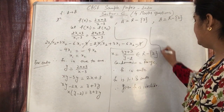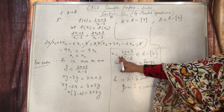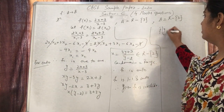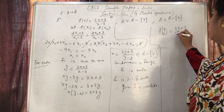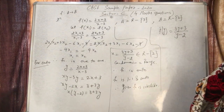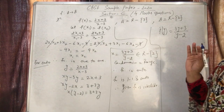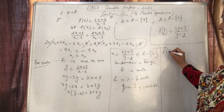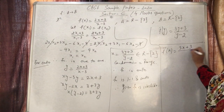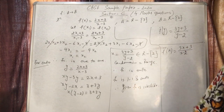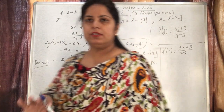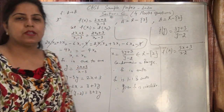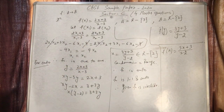Now we need to find the inverse. The value of x in terms of y that we found — x = (3y+3)/(y-2) — that is the inverse. So f⁻¹(y) = (3y+3)/(y-2). If the question asks for f⁻¹(x), we simply replace y with x, giving f⁻¹(x) = (3x+3)/(x-2). That completes question number 27.